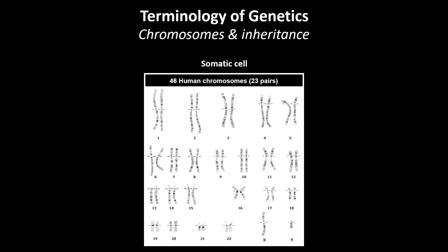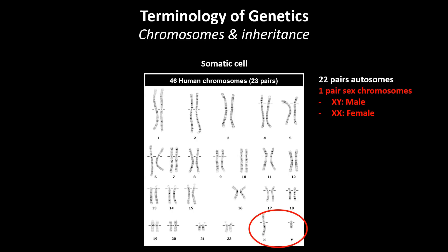The nucleus of a human body cell contains 46 chromosomes, which are organized in 23 pairs. 22 pairs are autosomes and one pair represents the sex chromosomes, determining the sex of the organism. XY represents a male, whereas XX would represent a female.